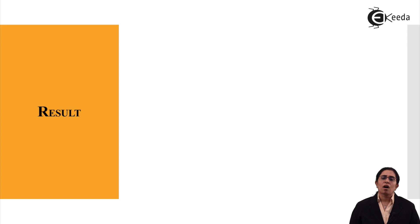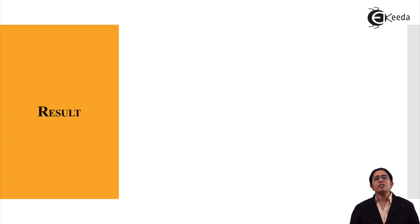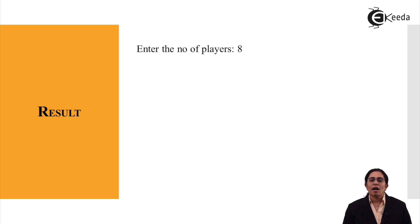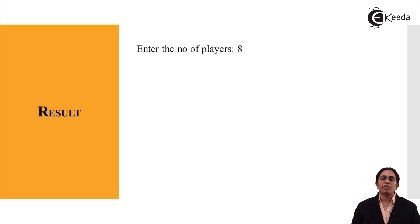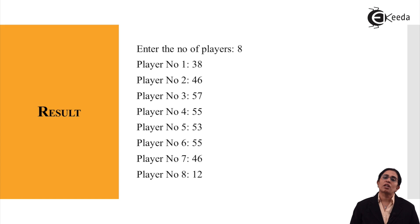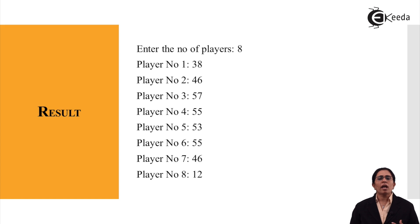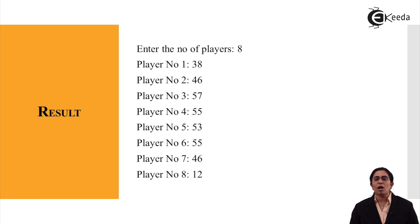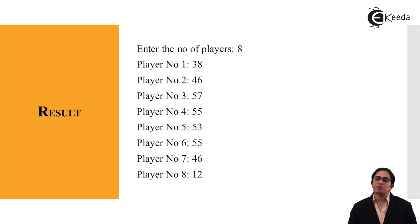Let's see how the code actually executes. When we enter the number of players as eight, the program generates random player numbers. Since p is an array of size 100, random numbers between 1 and 100 are generated, giving us players 1 through 8 with the following list.